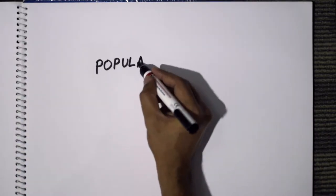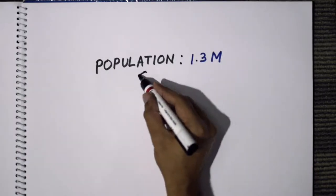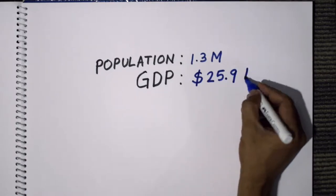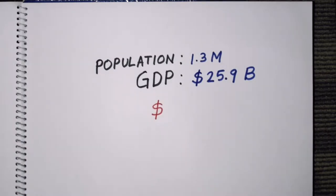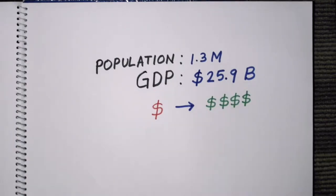With a population of 1.3 million and a GDP of $25.9 billion, Mauritius has undergone a remarkable economic transformation from a low-income, agriculturally-based economy to a diversified upper middle-income country that has attracted considerable foreign investment and has one of Africa's highest per capita GDPs.